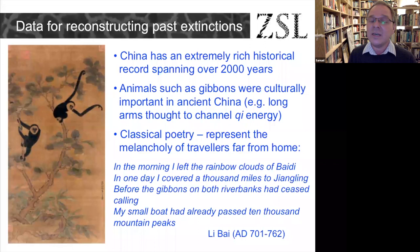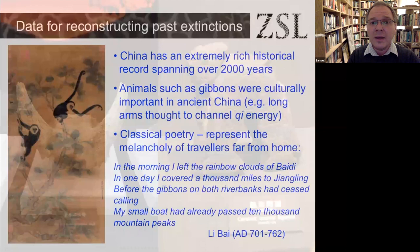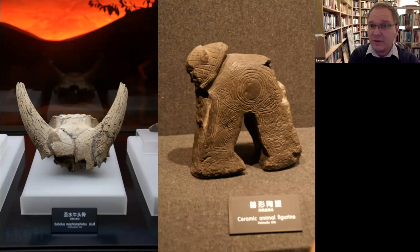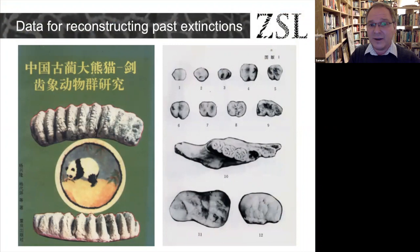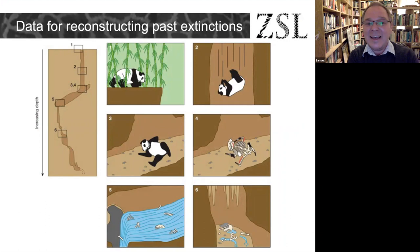Going further back, archaeological data includes bone records from human hunters and other artifacts — such as a ceramic elephant from the Hemudu site in the Yangtze Delta from about 8,000 years ago — showing that elephants once occurred there. Even further back, China has an extremely rich Pleistocene-to-Holocene fossil record, partly because, as one paper humorously illustrates, pandas appear to have enjoyed falling down holes and turning into fossils, giving China a very rich fossil record.